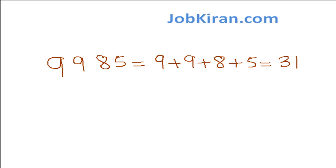But the digital root is always a single digit. So we have to add this 31 again, that is 3 plus 1. Answer is 4. The digital root of 9985 is 4.